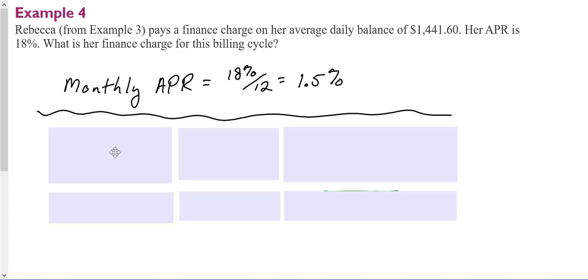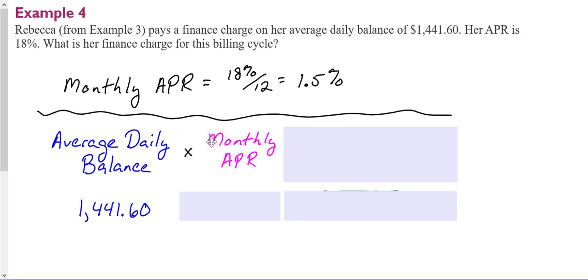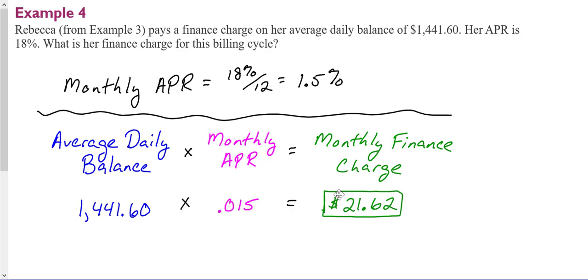For this month, we would take Rebecca's average daily balance of $1,441.60, multiply it times our monthly APR, which would be .015, because we need to remember it's a percent. So we need to convert it to a decimal. And we would wind up with a finance charge for that billing cycle of $21.62.